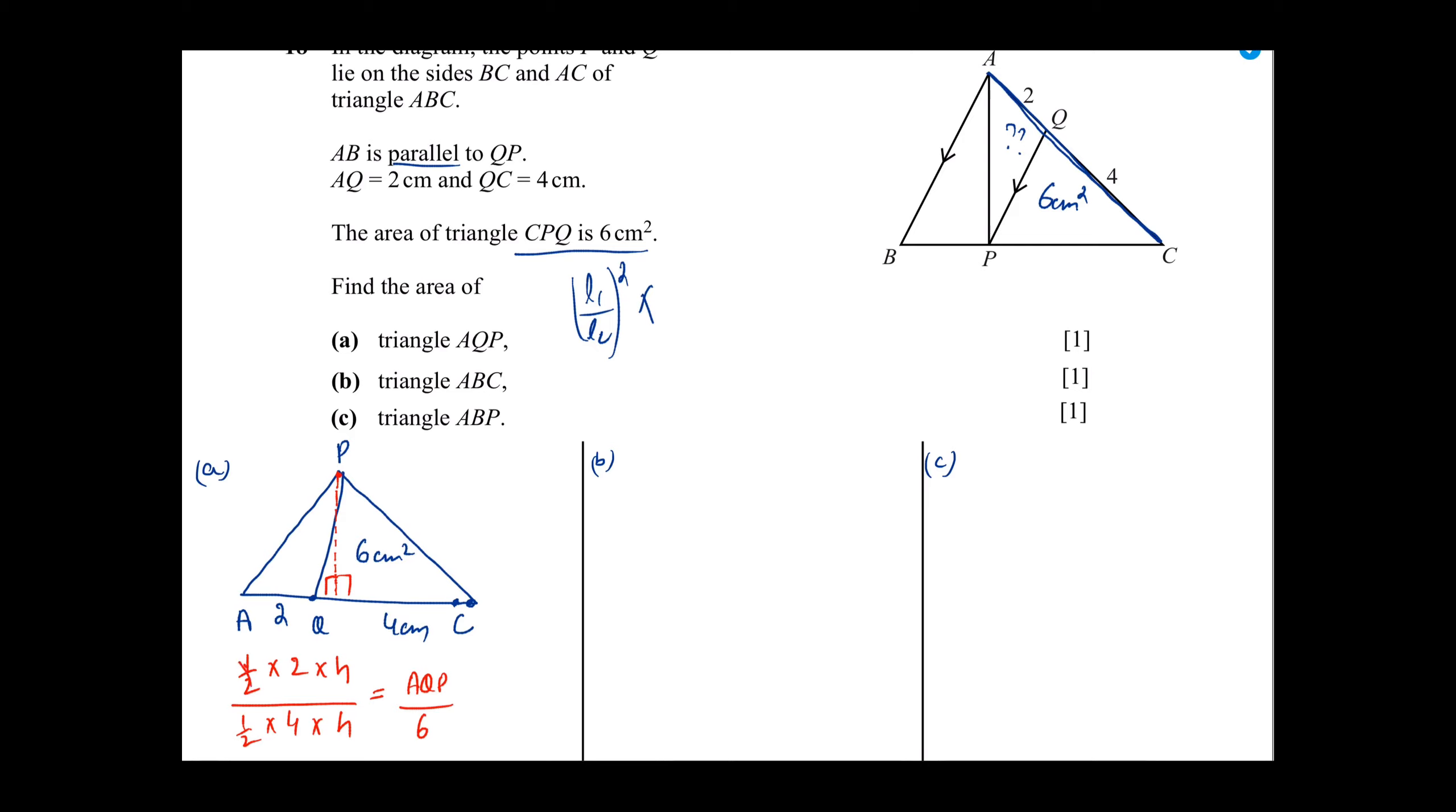Now, half to half cancel, height to height cancel. Now when you cross multiply, AQP will be equal to 6 into 2 upon 4. So 6 into 2 is 12, 12 upon 4 is 3cm².